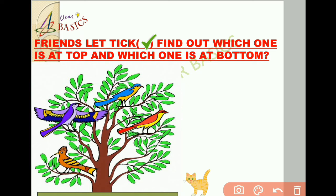Friends, I hope you all like to see different colorful birds flying in the sky. Find out which one is at the top and which one is at the bottom. Yes, this bird is sitting at the top of the tree, and the cat is standing at the bottom of the tree.